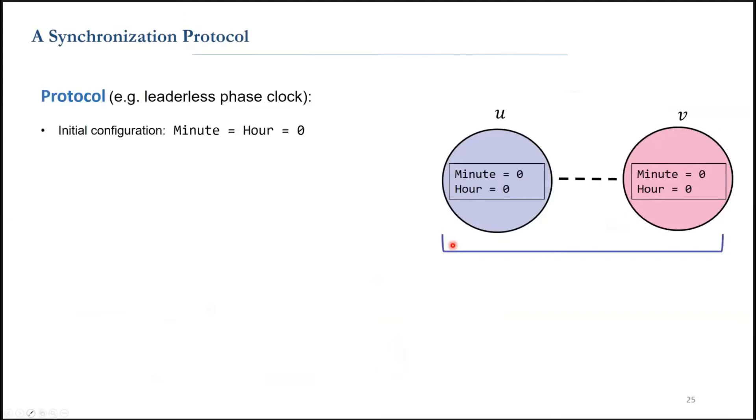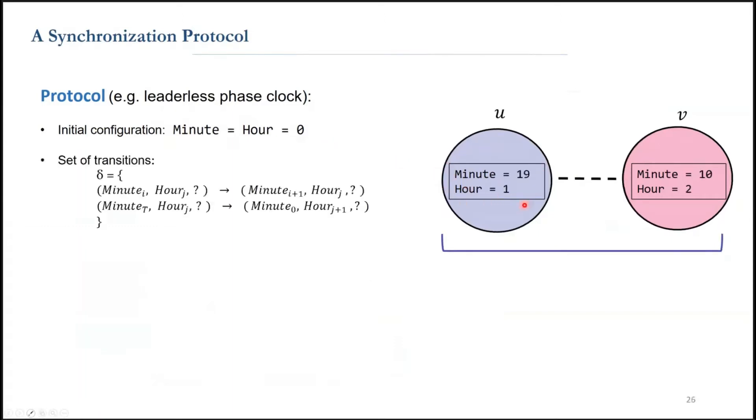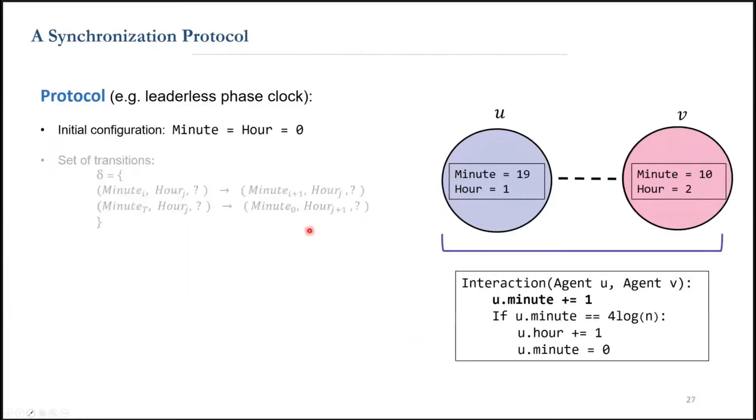There is a protocol called leaderless phase clock in which each agent has a field called an hour and another field called the minute, and they're both initially set to zero. We can write the rules with the same notation as before, but for better understanding, I use pseudocode.